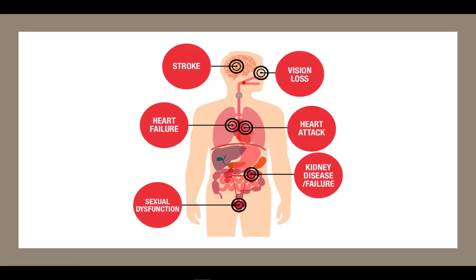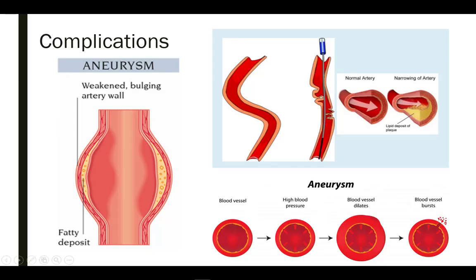Chronic untreated hypertension can lead to serious and potentially fatal health problems. Although much of the emphasis is on cardiovascular disease, such as heart attack, stroke, and aneurysms, hypertension can also significantly increase the risk of vision loss and kidney disease or failure. High blood pressure causes blood vessel or artery damage. Hypertension gradually increases the pressure of blood flowing through your arteries, causing damage to the vessels which leads to inflammation and fatty plaque buildup.